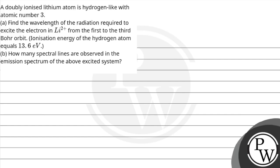Hello, let us read this question. A doubly ionized lithium atom is hydrogen-like with atomic number equals to 3. Find the wavelength of radiation required to excite the electron in lithium 2+ from first to third Bohr orbit. Ionization energy of the hydrogen atom equals to 13.6 electron volt.